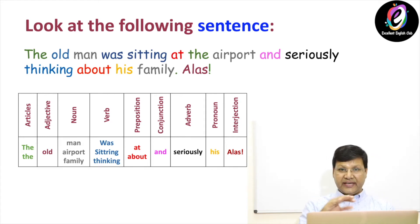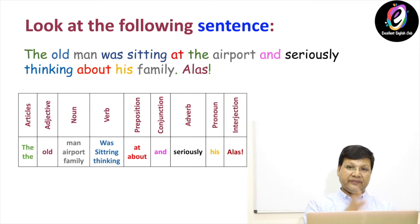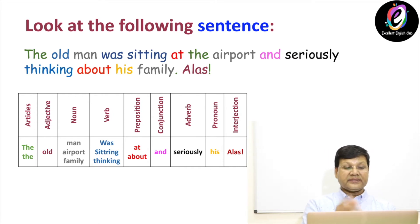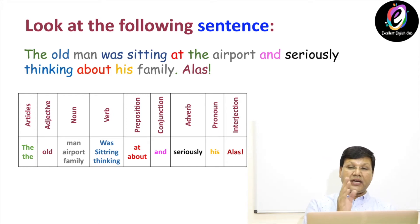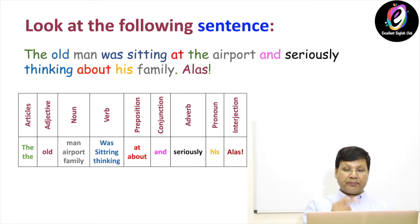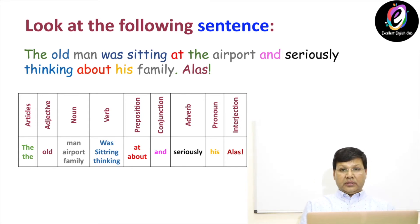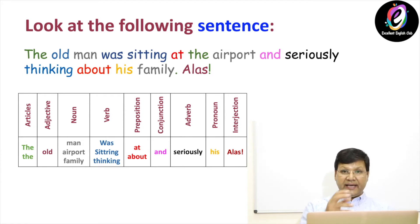The first column, which is in green color, is articles. As we know, we have definite and indefinite articles — these are the definite articles used in two places in this sentence. The second thing is adjectives — 'old' is an adjective. The third one is noun; in the noun column you will have three nouns in this sentence: man, airport, family.